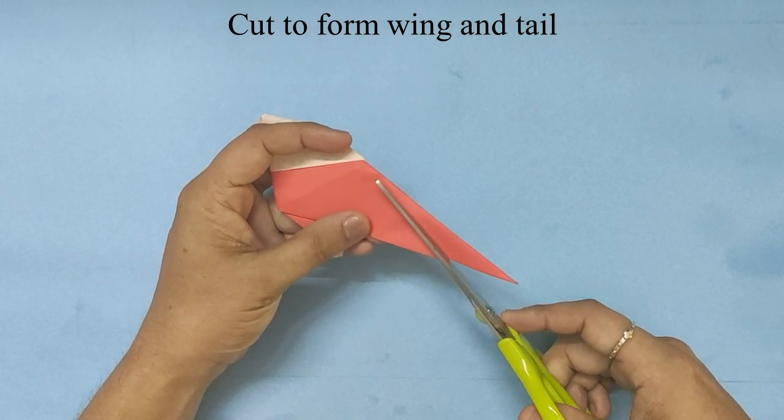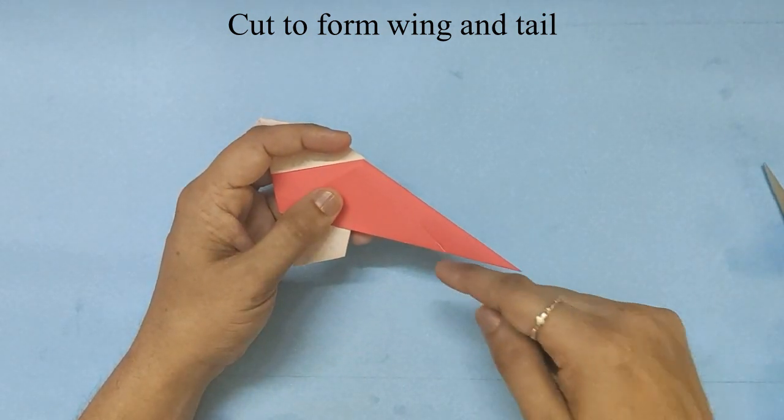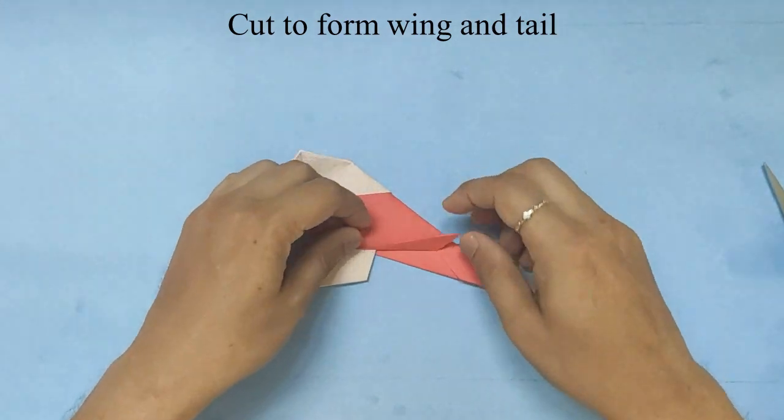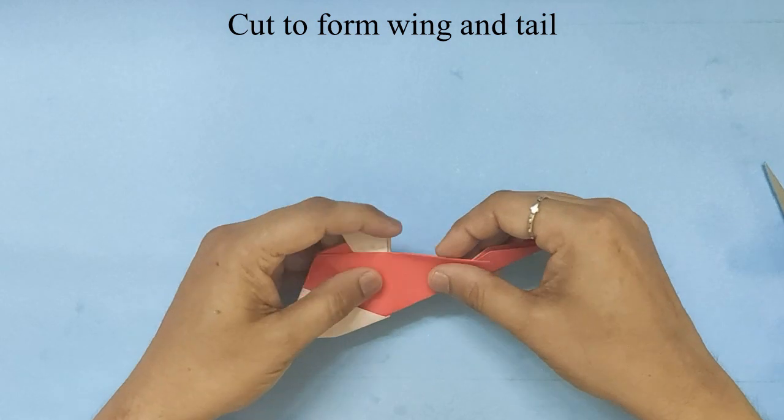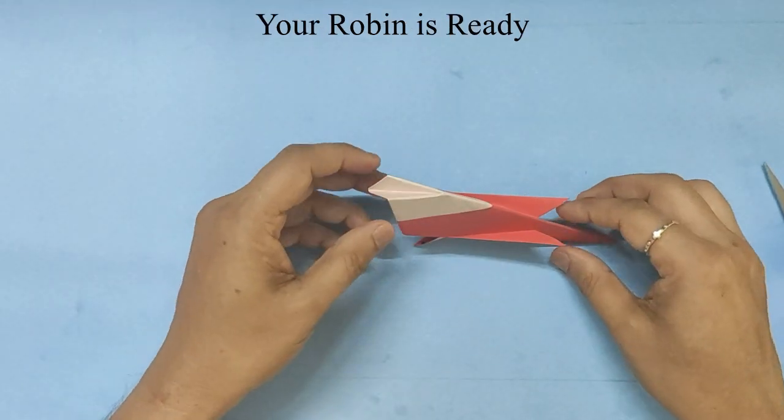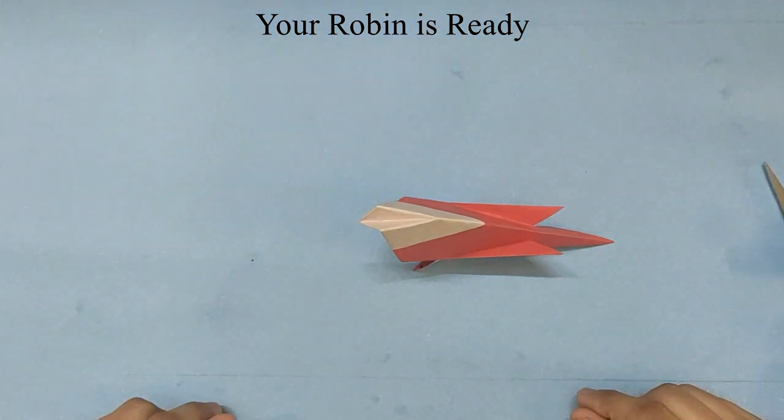To form the tail, fold the cut part up to form the two wings. Your robin is ready.